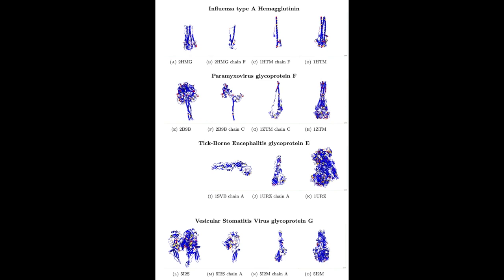We test our hypothesis in four explicit examples where the mechanics of pre- to post-fusion reconformation are relatively well understood. Namely, we consider the fusion glycoproteins of influenza type A, paramyxovirus, tick-borne encephalitis, and vesicular stomatitis virus. In each case, the PDB contains both pre- and post-fusion structures so we can compare PDB files for their viral glycoproteins in the two conformations.